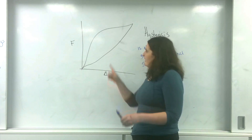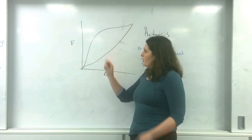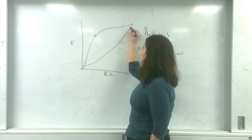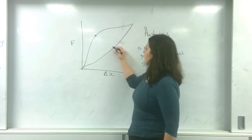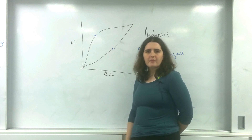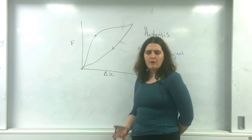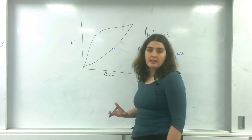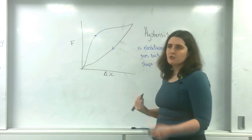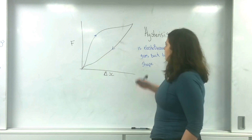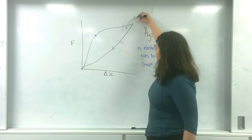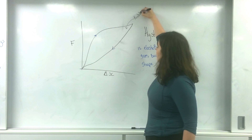The interesting part is it's not following the same route. So it goes up this way to a point, then comes back down like this. This is a very typical material — it's called rubber. Rubber is the typical material that follows hysteresis, like you find on a rubber band.